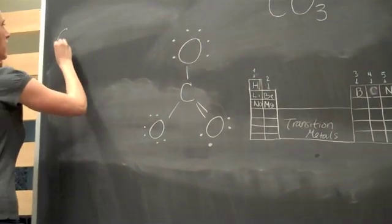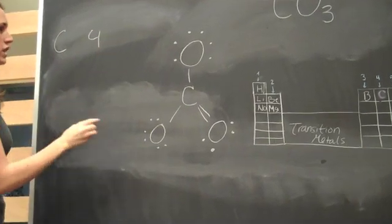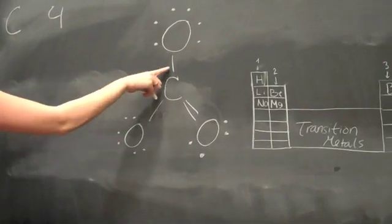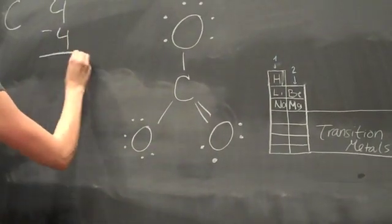So for C, we know that they have four valence electrons. And it has four bonds. So one, two, three, four. So four minus four is zero.